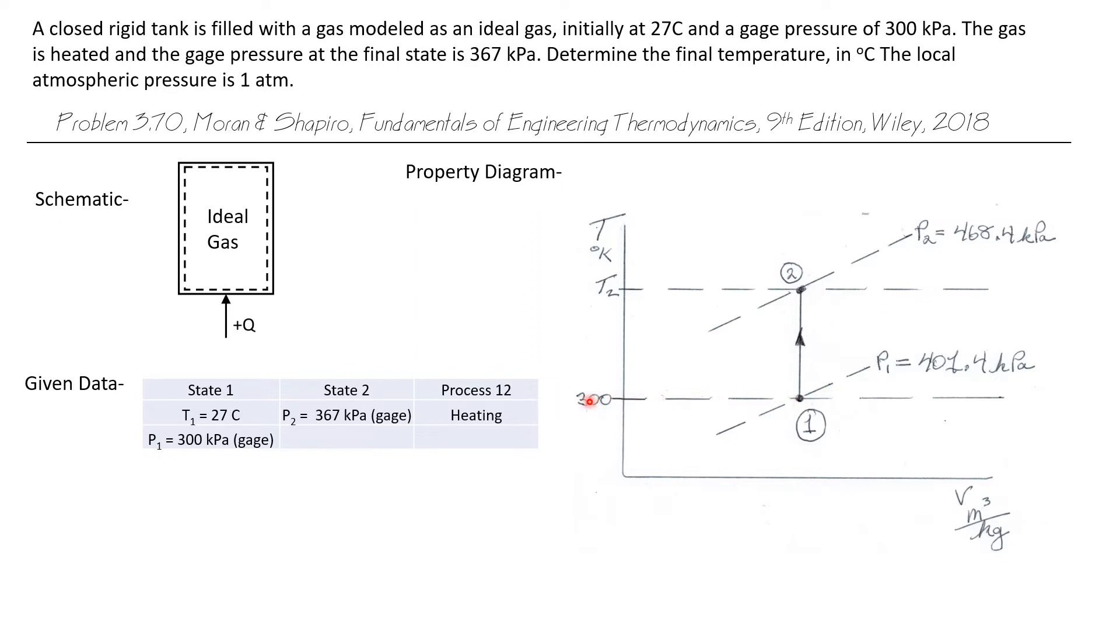State 1 has an absolute temperature of 300 degrees Kelvin and is at an absolute pressure of 401.4 kilopascals. This is a constant volume process, so we're going to go up a vertical line on the T-V diagram to state T2 unknown, but the absolute pressure here is 468.4 kilopascals.